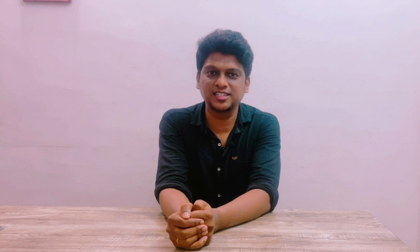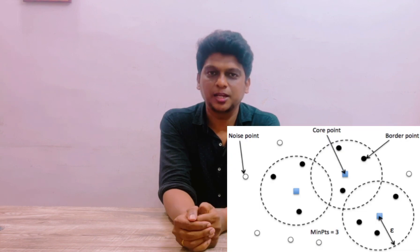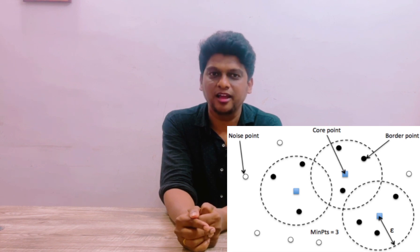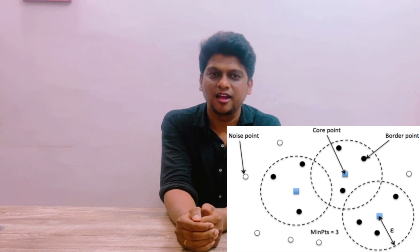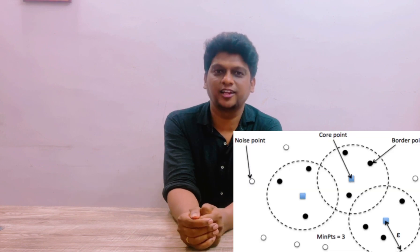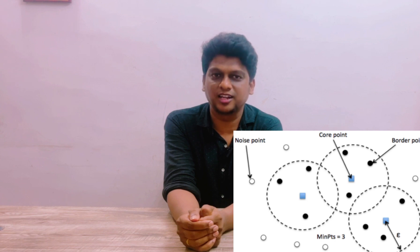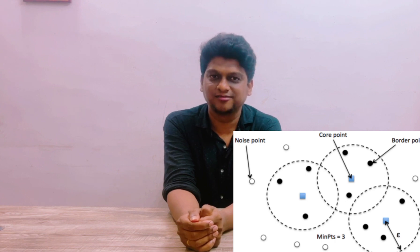Number one is initialization — find all the points in the epsilon neighborhood. Step two of the algorithm is expanding the cluster; with the help of the core point we can expand the network. Number three is growing the cluster — all data points that are near to the core of the cluster should be identified. Step four is noise: the points that are not reachable from that cluster are defined as noise. Let us discuss about DBSCAN in detail.